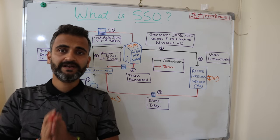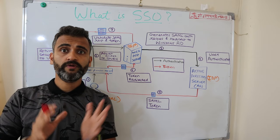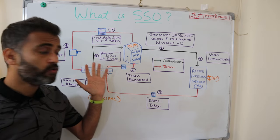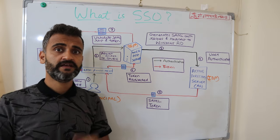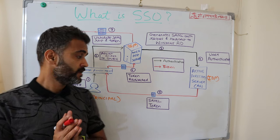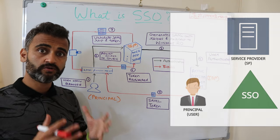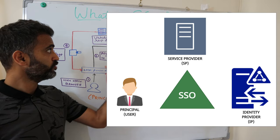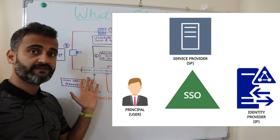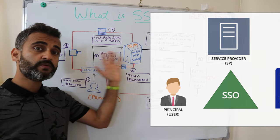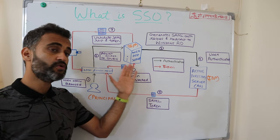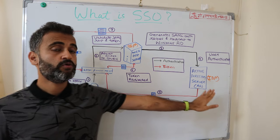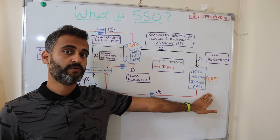Now let's understand this workflow of end-to-end single sign-on authentication using Windows Active Directory. First understand that there are three parties involved. Number one is the principal, or the actual user who is initiating a request. The request is meant to go to a service provider which serves that particular specific request. But before serving it, this service provider needs to know whether this is a legitimate user, for which we contact the IDP — the identity provider.